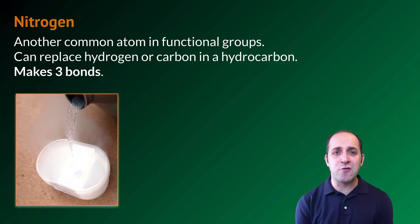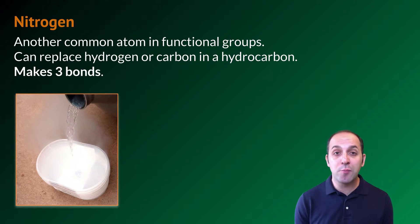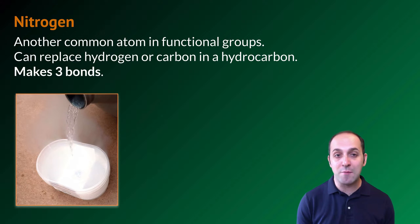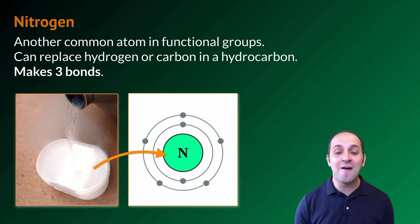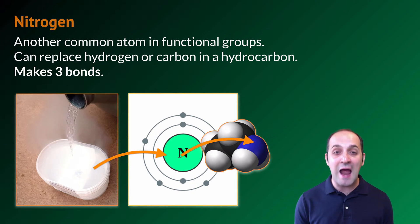Let's start by talking about nitrogen as an element. It's another really common element that we find in functional groups, and it can replace hydrogen or carbon in the hydrocarbon, just like oxygen could. But unlike oxygen, nitrogen can make three bonds. This is an image of liquid nitrogen, which is very cold, and you can see that nitrogen has five valence electrons, which means it's looking to make three bonds to complete its valence. That's why we wind up getting nitrogen as an element in different kinds of functional groups.